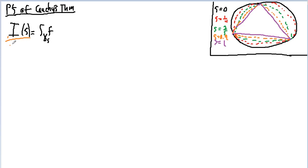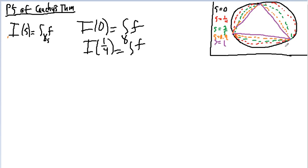I'm going to define this I sub S here. This I sub S just means, hey, so I sub 0 is just going to be the function over the black circle. And then I sub 1/4 is going to equal the contour integral over this red thing. And I sub 3/5 would be over the green, and I sub 0.9 is over the orange, and I of 1 would be over the purple.